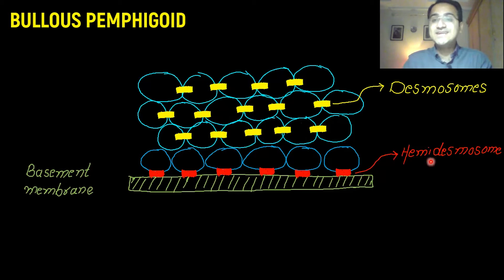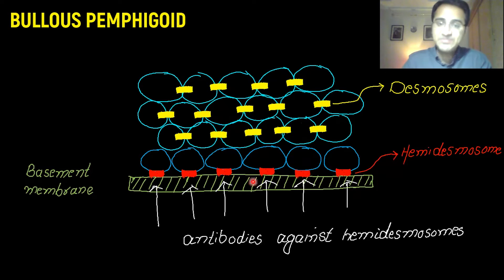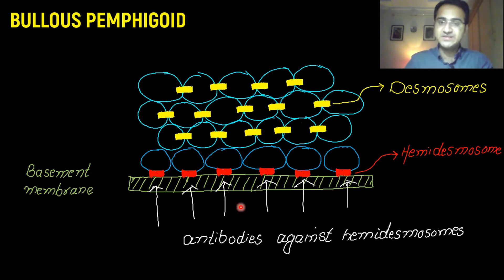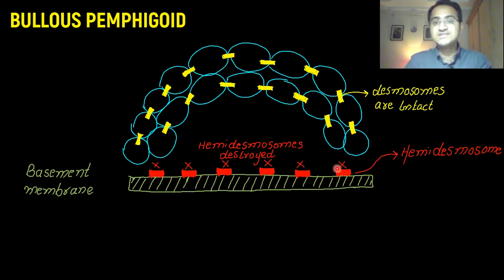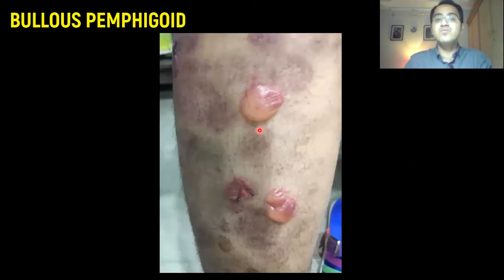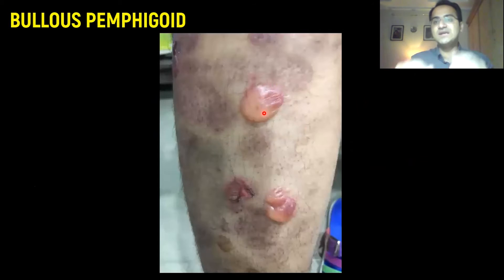In bullous pemphigoid, antibodies are formed against hemidesmosomes. Whenever these antibodies destroy hemidesmosomes, the skin cells detach from the basement membrane. The cells on the basement membrane are no longer attached to it, and that leads to the formation of bullae and blisters. This is a picture of a bullous pemphigoid blister showing how the skin has detached and fluid has accumulated.